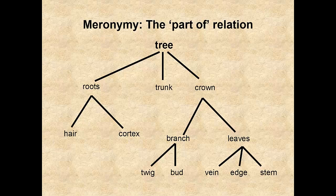Meronymy is the part-of relation. In this diagram, we can see that the roots, the trunk, and the crown of a tree are all parts of a tree. Unlike hyponyms, they are not types of trees, but are parts of trees.